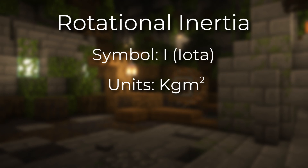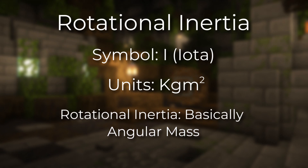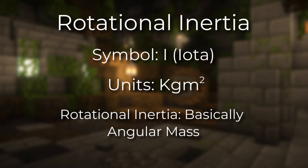In the rotational video from before, we discussed how rotational inertia was basically the mass of the angular world. Since we're not measuring how hard it is to move in a linear direction and instead how hard it is to spin, we have different formulas.